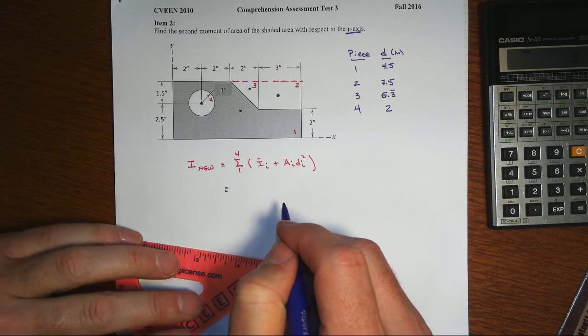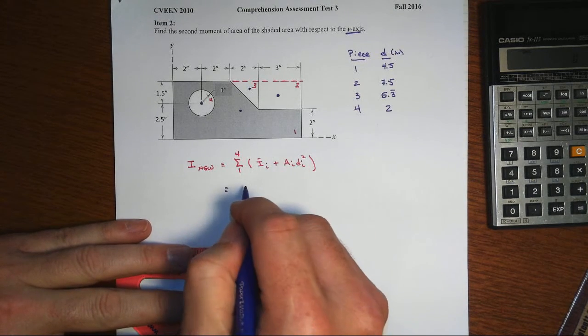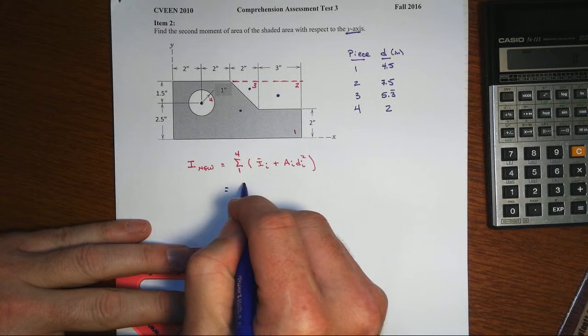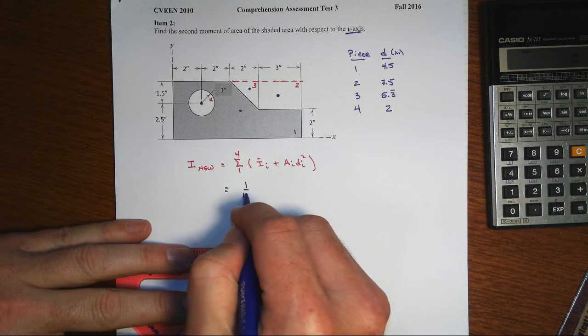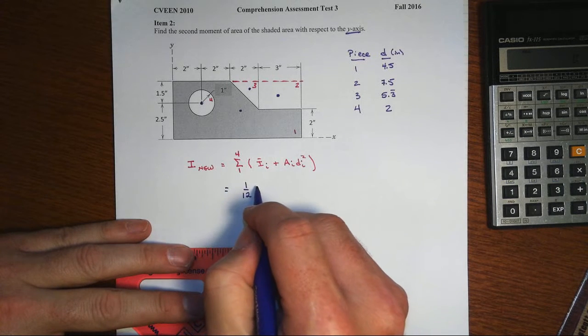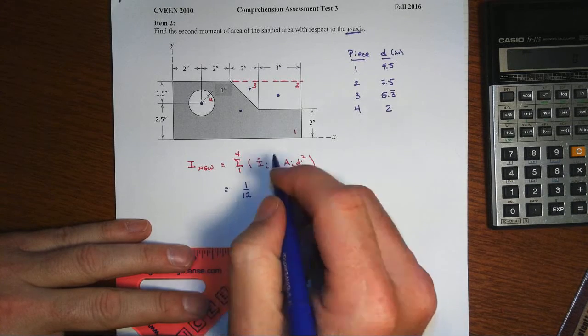So although there are some ways we could make this a little bit shorter, we won't do that. We will just go in the parallel axis theorem for each one. So the rectangle is 1/12 of the base times the height cubed, where the base here is 2 inches.